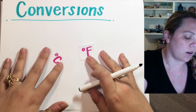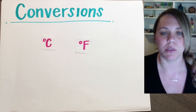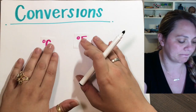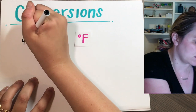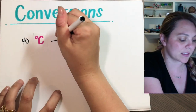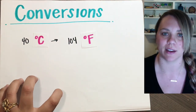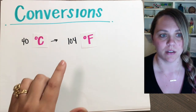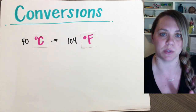All you're doing with conversions is just converting between units. So if I had 40 degrees Celsius, that's really hot — that's like the equivalent of 104 or 105 degrees Fahrenheit. 40 degrees Celsius, 104 degrees Fahrenheit. All I'm doing is changing the units when I convert between units.